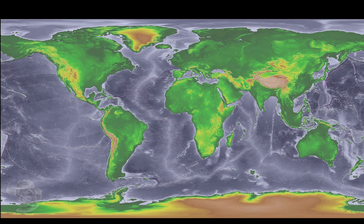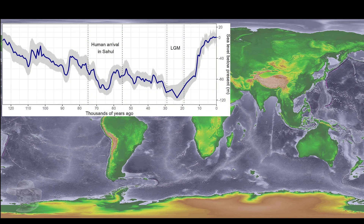Here's a world view at the Last Glacial Maximum. Sea level was 120 metres lower than it is now, about 24,000 years ago. As you can see, it is a cycle — although it's a cycle that isn't repeating itself completely anymore.